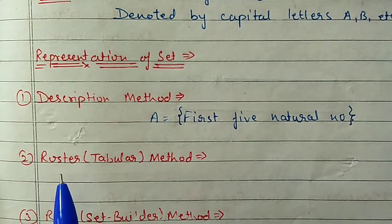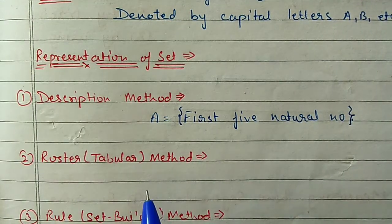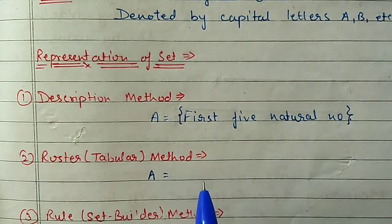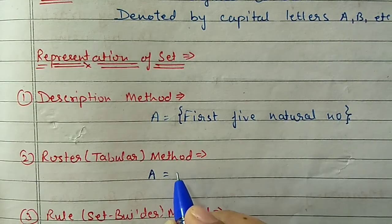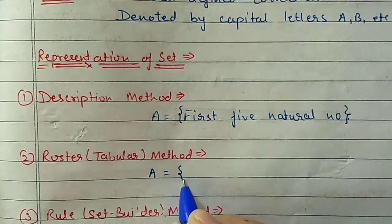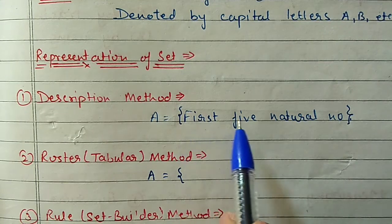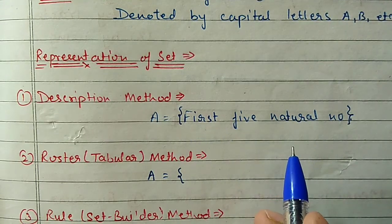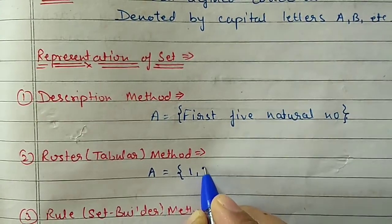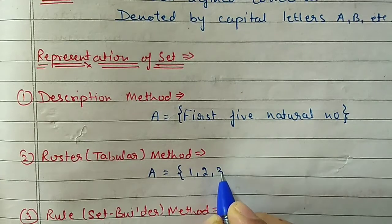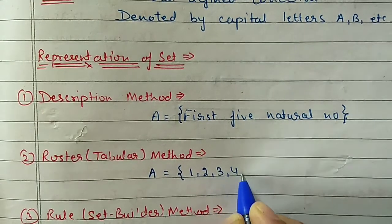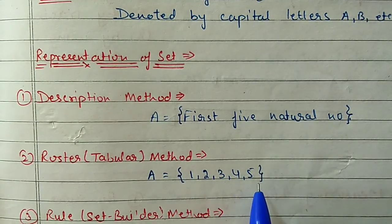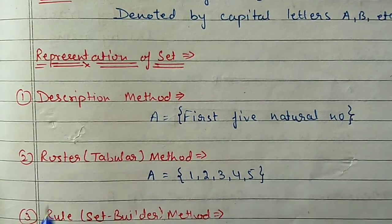The second method is roster or tabular form. In tabular form we will write the elements inside flower brackets separated by commas. So the first 5 natural numbers are 1, 2, 3, 4 and 5. This method is called tabular form or roster form.